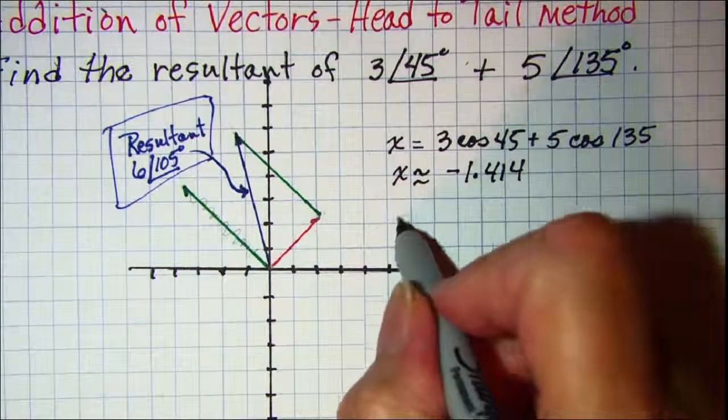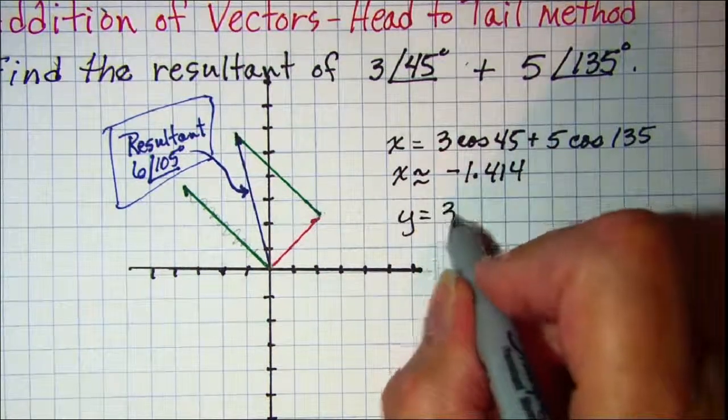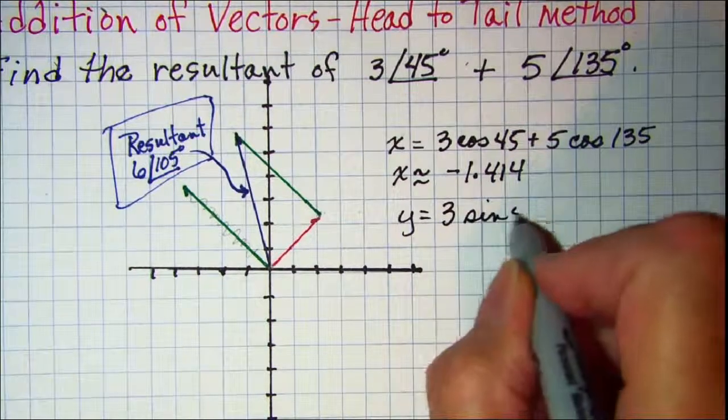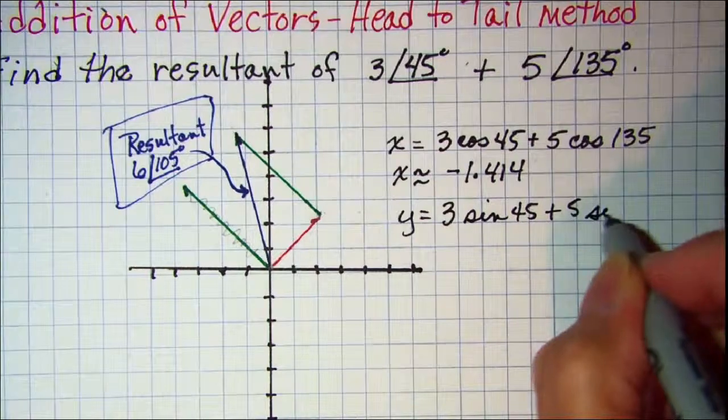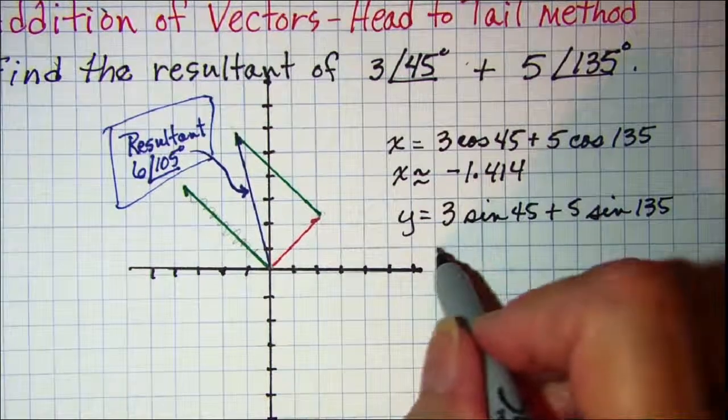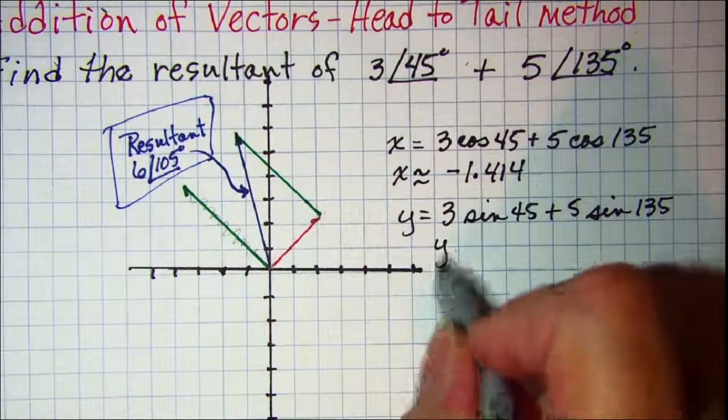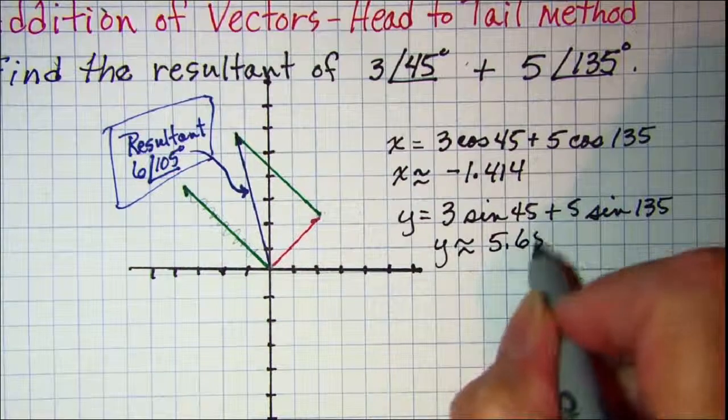Then my y value of my resultant will be 3 times the sine of 45 plus 5 times the sine of 135, and that gives me a y value of approximately 5.657.